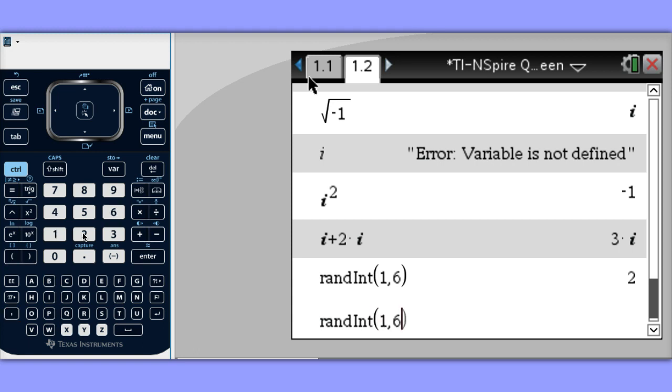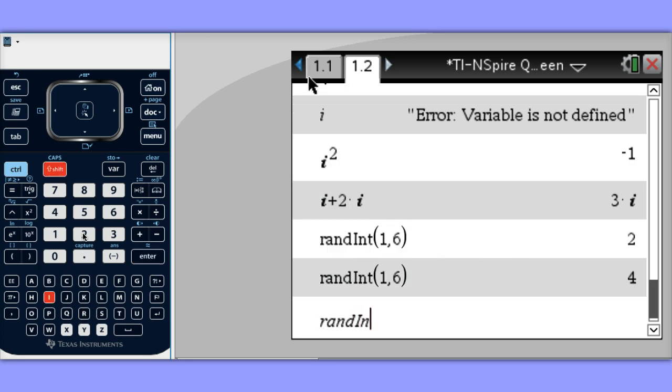Let's do this again. 1, 6 to simulate rolling a fair six-sided die. I'm going to think it's a 4. I'm pretty lucky here.